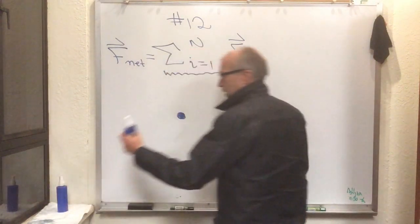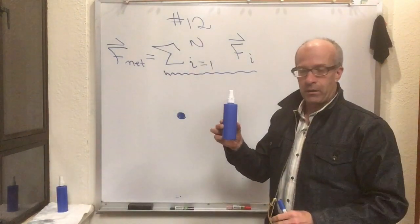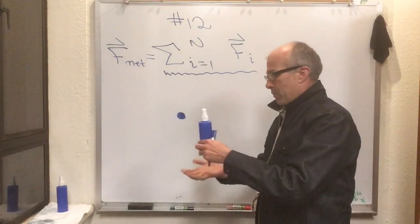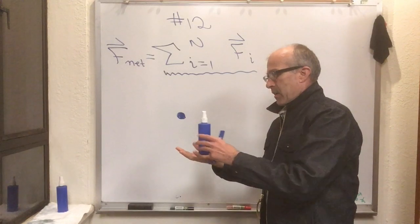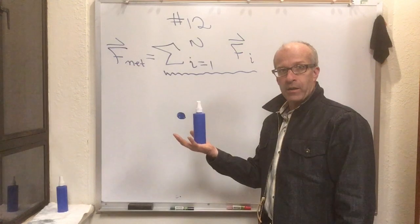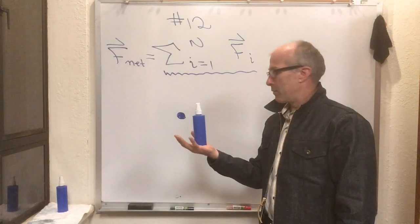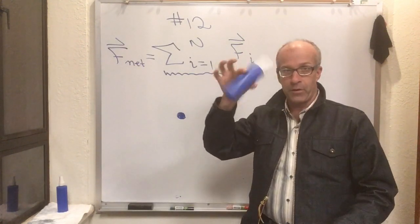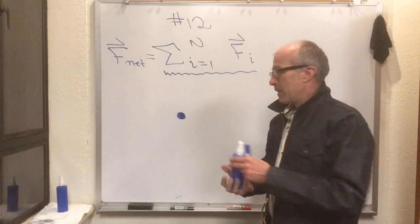So the object could be this bottle, and at the moment here I am pressing on the bottom of the bottle. And the bottom of the bottle is actually pressing back on me, but the bottle is the thing I'm focusing on, not me.